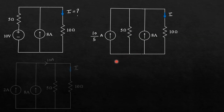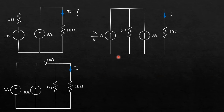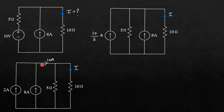Now let us rearrange this circuit. I have shifted this current source here and shifted this resistance to this side. The value of 10 by 5 is equal to 2 A. Now at this node, if you apply KCL, 2 plus 8 gives 10 A of current flowing in this branch, which will get divided into these two branches.